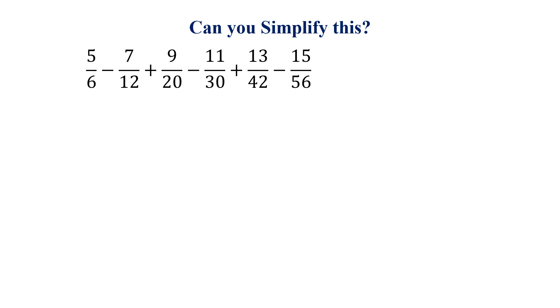If we look at the numerators 5, 7, 9, 11, 13, 15, these are all odd numbers. If we look at the denominator,